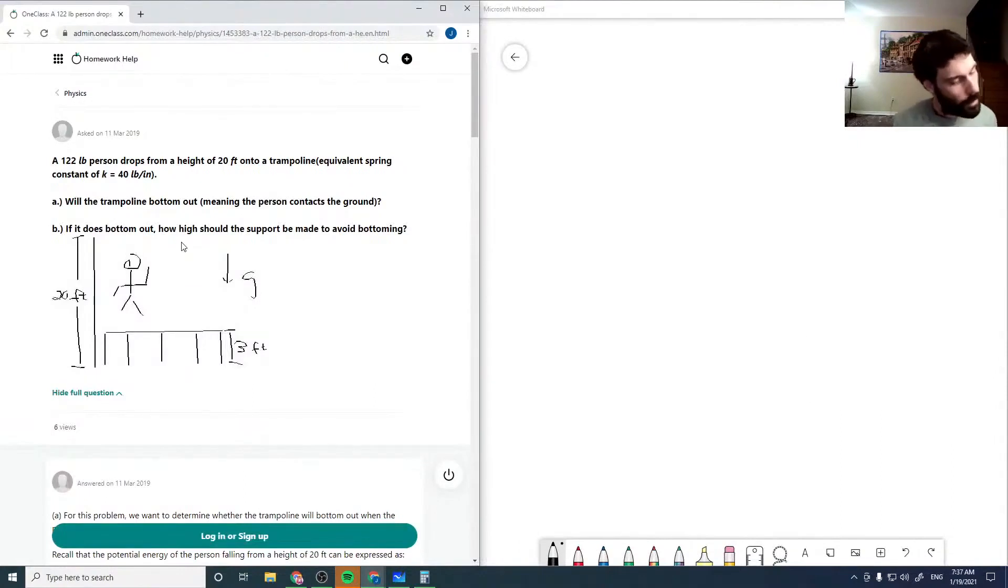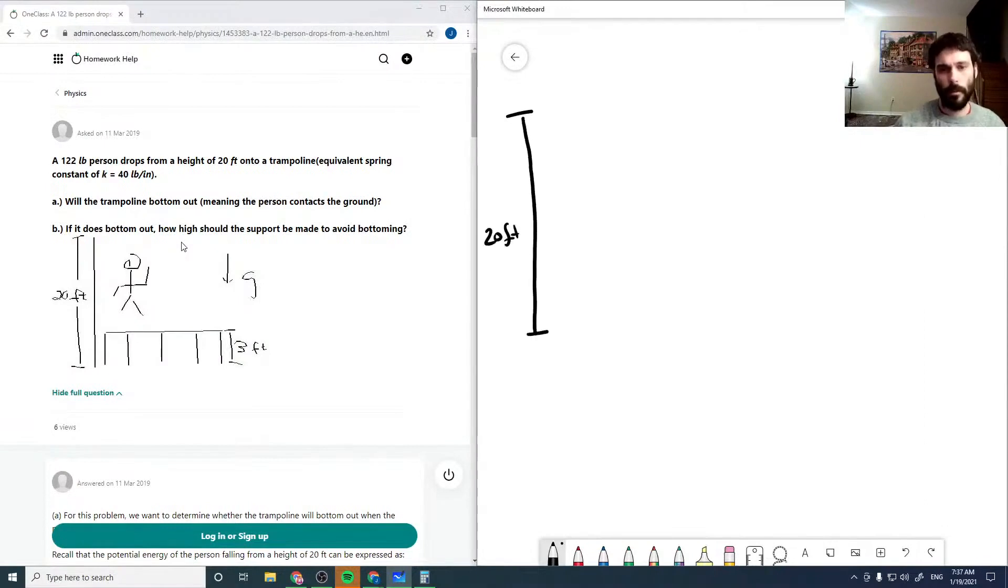All right, so now we have a 122 pound person dropping from a height of 20 feet onto a 3 feet tall trampoline, and it wants to know what distance this moves. It gives us the spring constant for the trampoline, and so I'm going to call this delta x, which is equal to 3 feet minus my height.